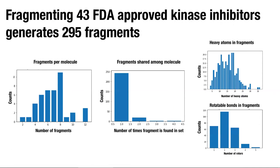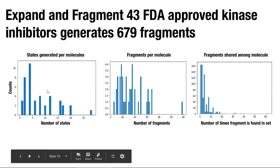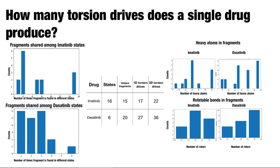In this set I did not expand states — just the neutral forms. When I expanded the states, we arrive at roughly double the number of fragments. But many of these fragments overlap with each other across states, so we're only doubling the amount of fragments that we actually have to drive torsions for. For congeneric series, we'll probably have many more overlapping fragments, so the computation needed by adding more molecules to the series won't increase that much.